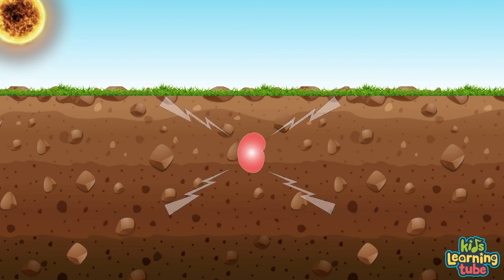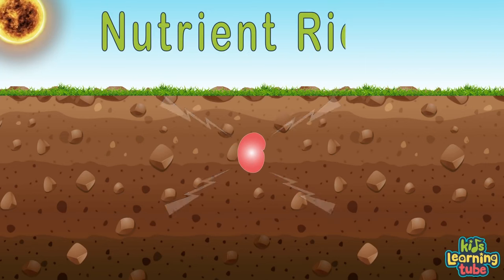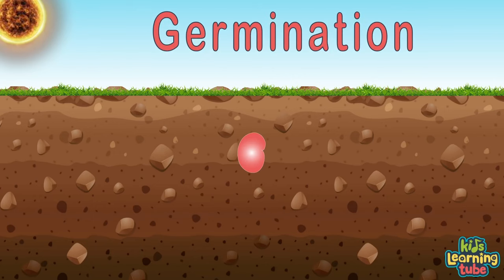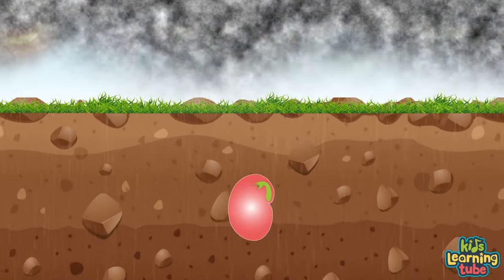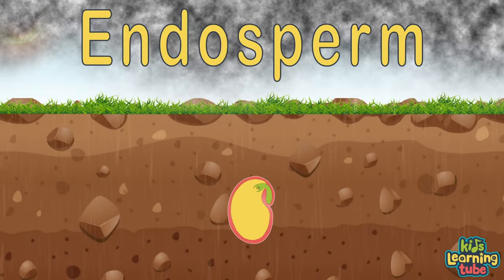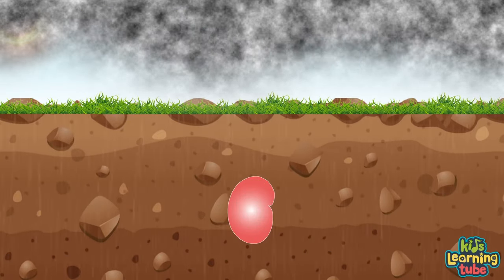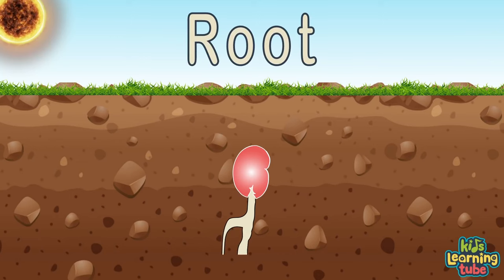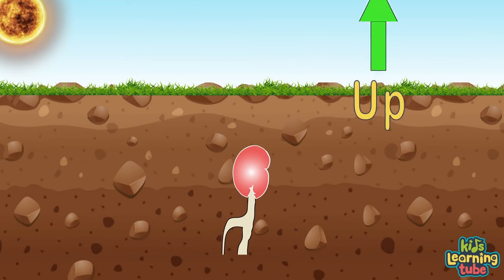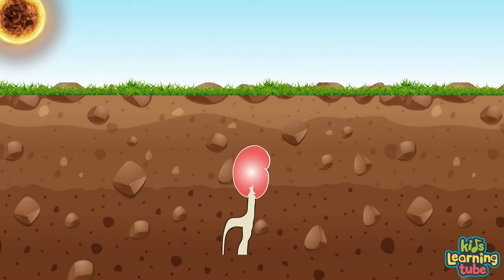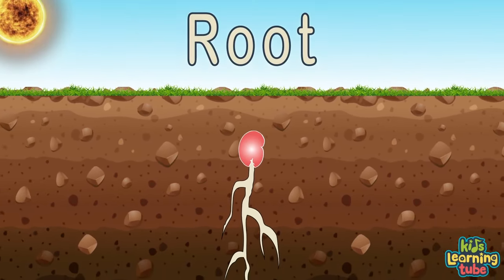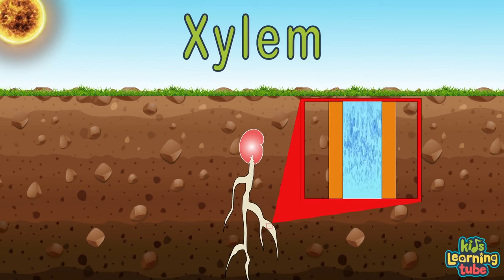When the seed coat senses it's in the right place to grow — like deep down in nutrient-rich soil — it lets the embryo know. The embryo is now ready to start to grow in a process called germination. When the seed coat lets some water through, the embryo will feed off the endosperm until leaves start to grow. The embryo keeps drinking water until the seed coat splits, and the first thing that sticks out is the root reaching down. The roots keep moving down searching for more water and nutrients, sucked up through the xylem to feed the embryo.